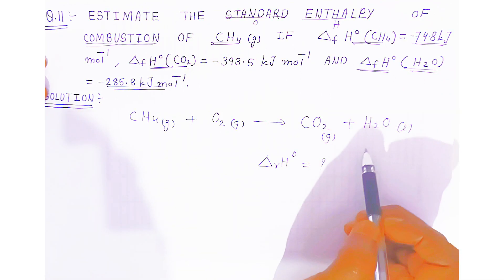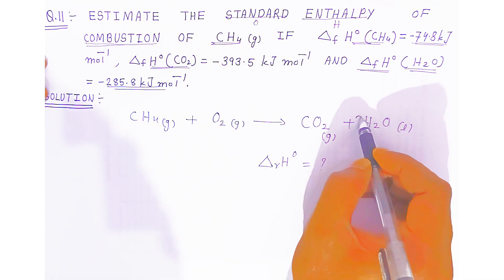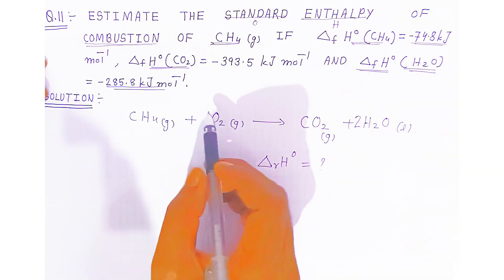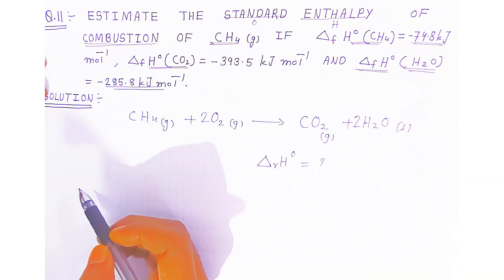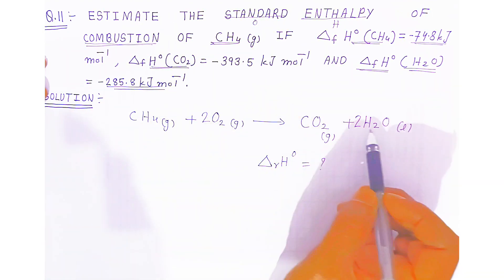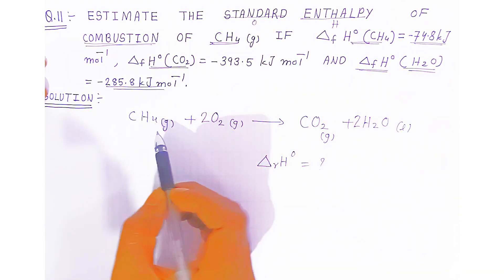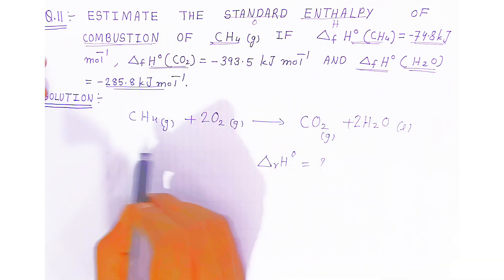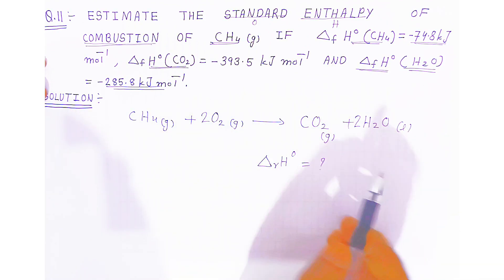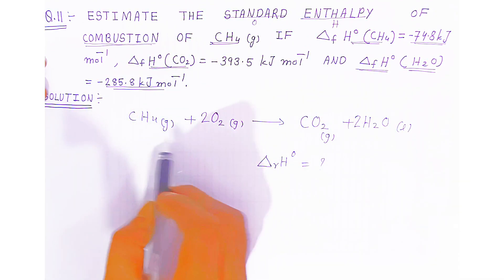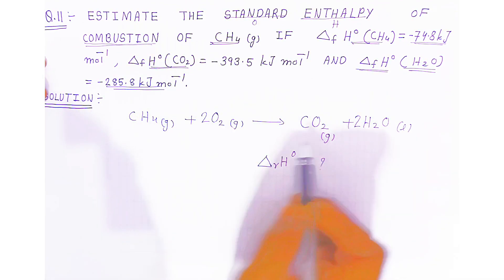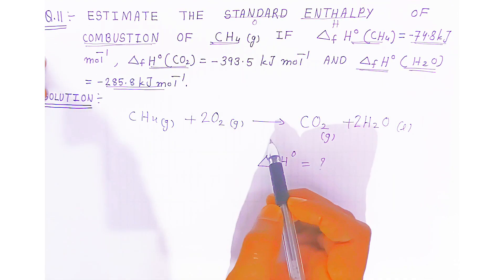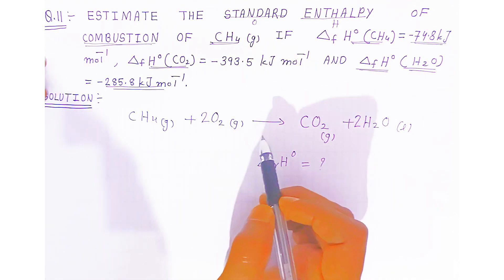To balance it, we multiply the water by 2, giving 4 oxygens total, so we balance with 2 O₂ on the reactant side. Now hydrogen is balanced, and oxygen is balanced. The balanced equation is: CH₄(g) + 2O₂(g) → CO₂(g) + 2H₂O(l). Balancing the reaction carries marks — this is a 3-mark question in examination.